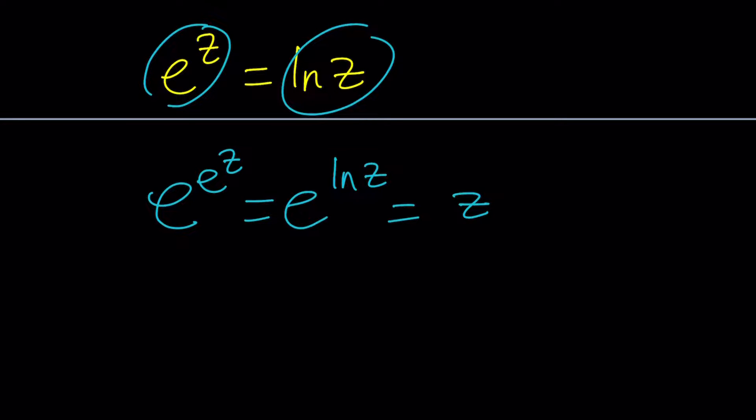Now, we got something interesting. Z equals e to the e to the z. So, if I take z and exponentiate it like twice, I get the same thing. Wait a minute. I can keep doing this, can't I? Because look at this. Z equals this, and I have another z here. So, I can replace this z with this because this is z. Does that make sense?